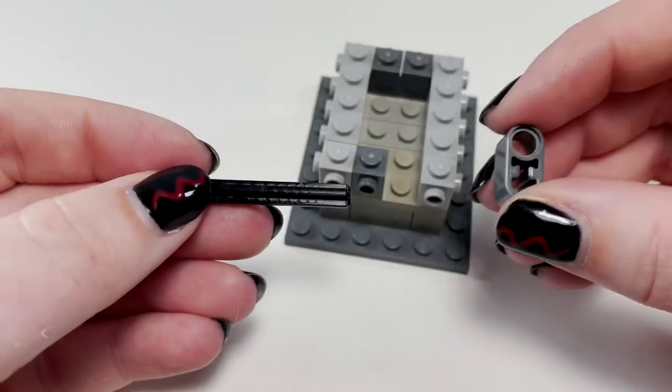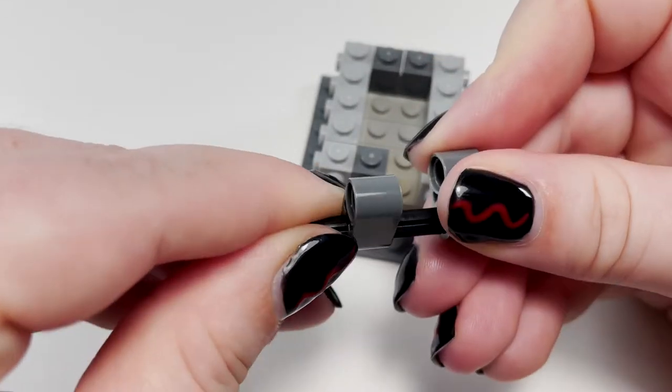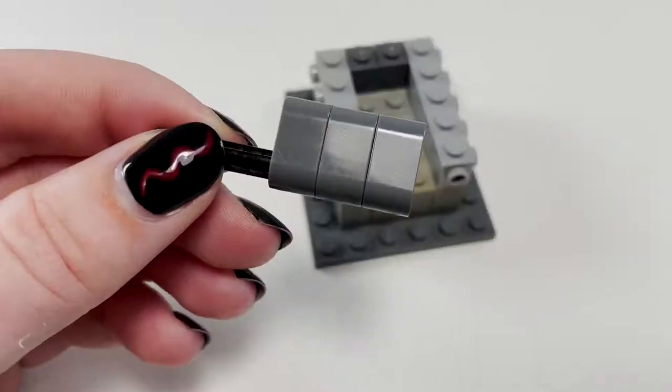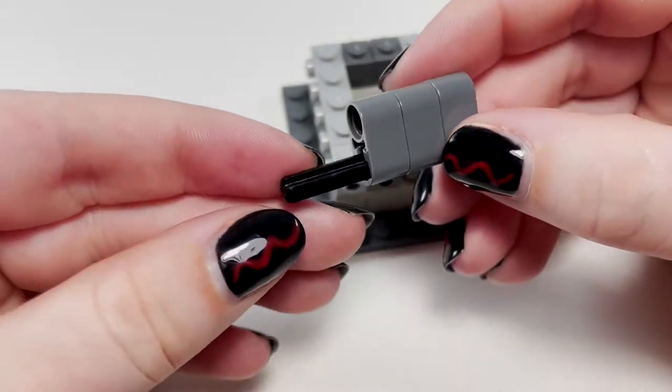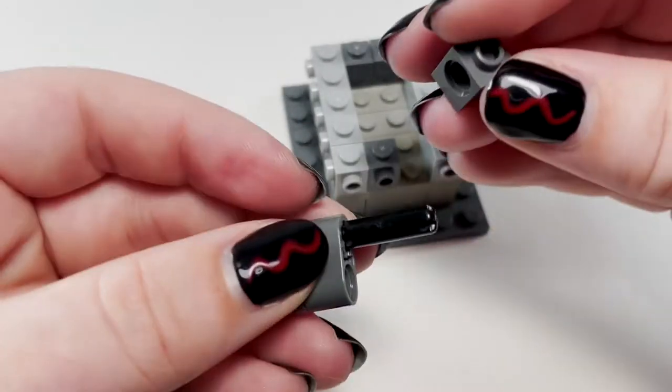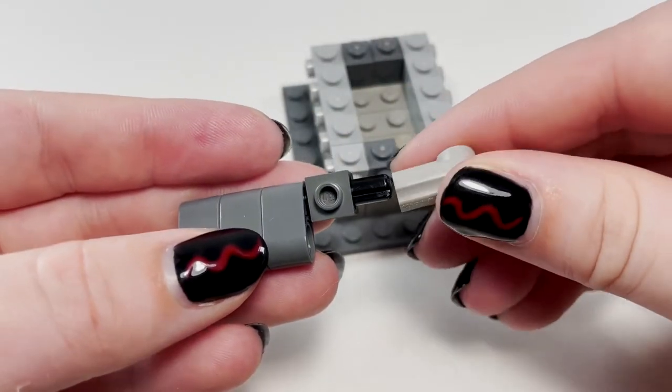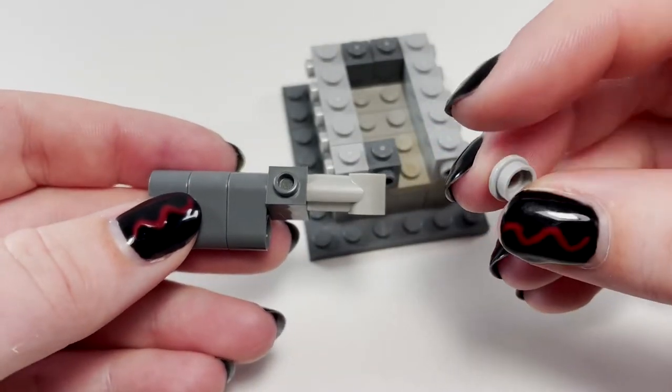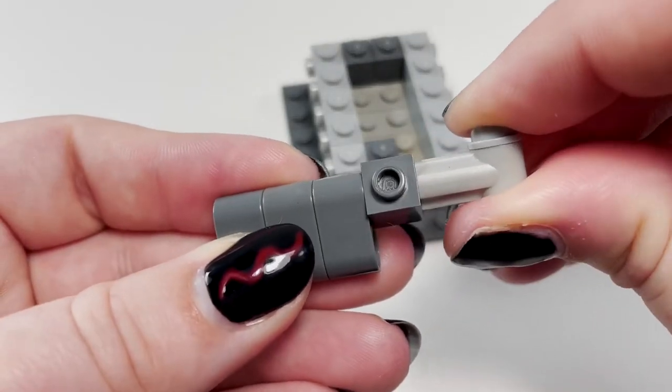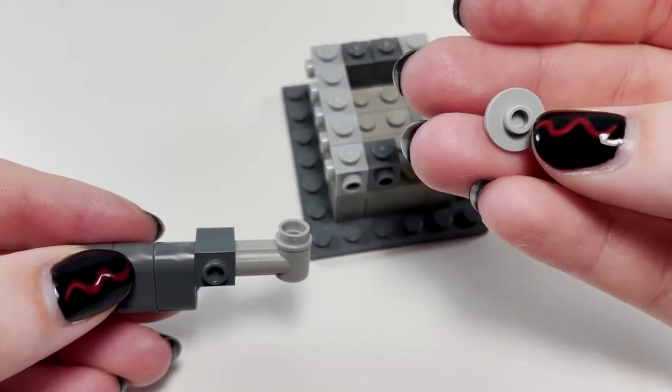Now we'll build a simple lever mechanism. It consists of a five stud long axle with Technic lift arms for launching the knight. And on the other end, a round sign piece forms a nice pushable lever.